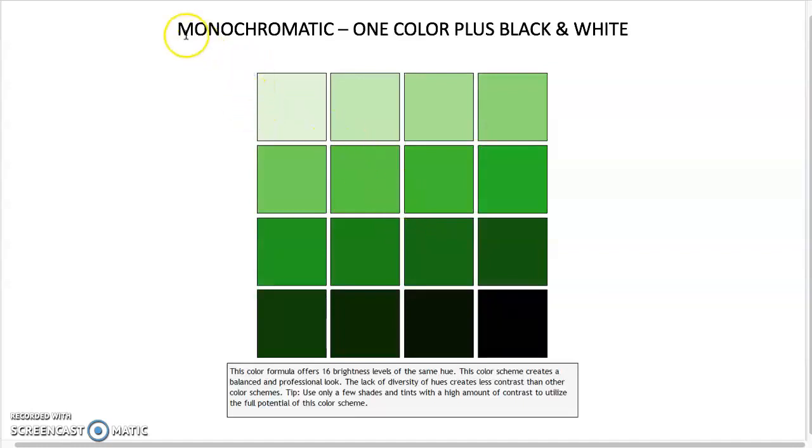This is kind of showing you how this connects to the idea of monochromatic: one color plus black and white. You could make an entire composition with black, white, and one color. It would be called monochromatic. This color formula offers 16 levels of the same hue.